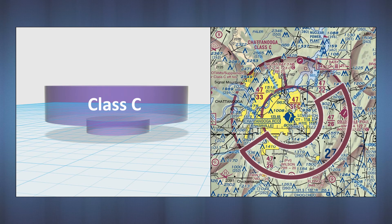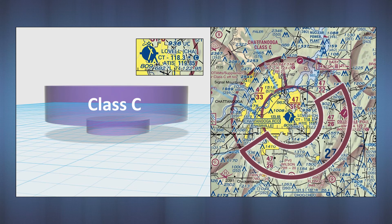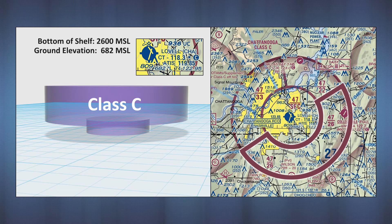Looking at the larger section on the south, we see that the bottom is 2,600 MSL. The airport information indicates that field elevation is 682 feet above sea level. So, to determine the altitude of the shelf in AGL, just do the math. 2,600 minus 682 gives us the answer, 1,918 feet above the ground.